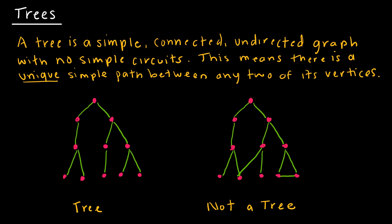A tree is just a simple graph — simple means no loops, no double edges. It's connected and undirected, with no simple circuits. A circuit is where you can connect from one vertex to another and back to the beginning. Essentially, this means there is a unique simple path between any two vertices.